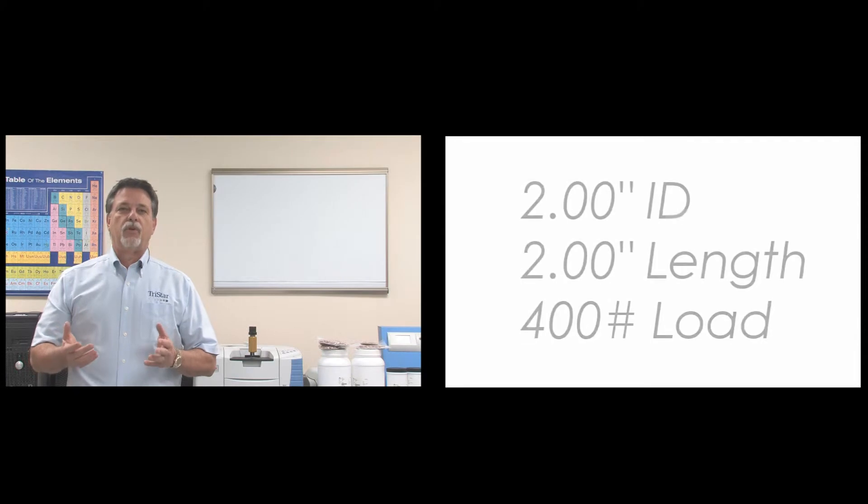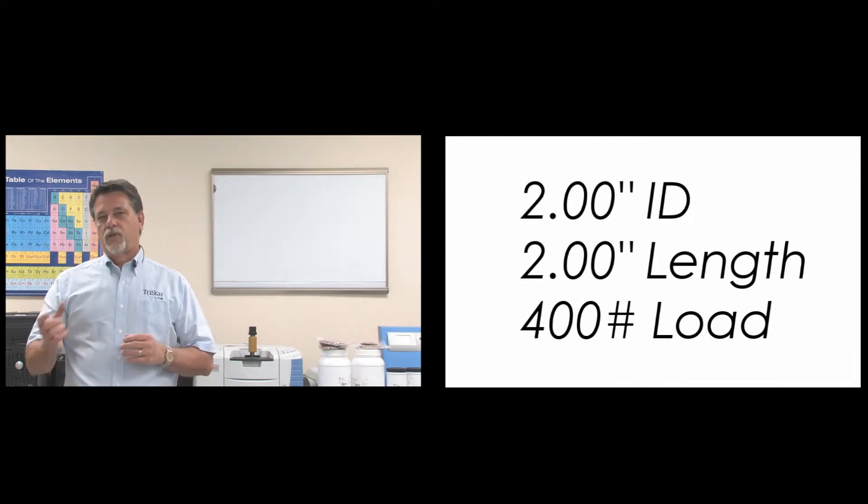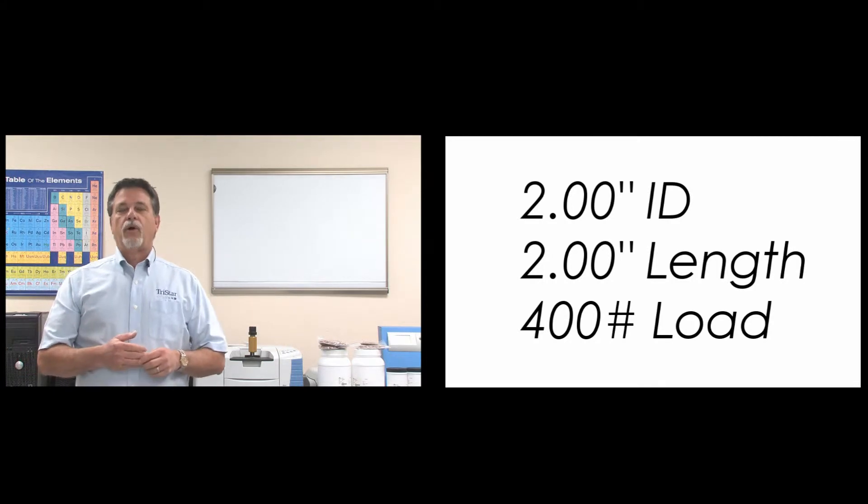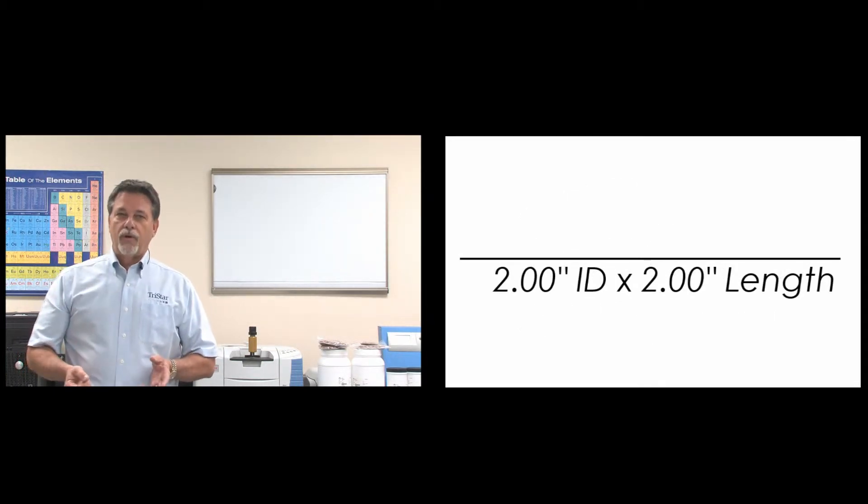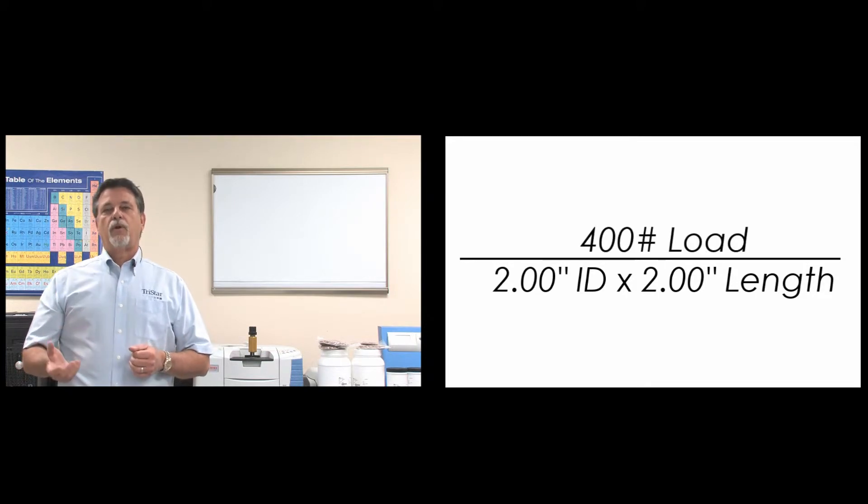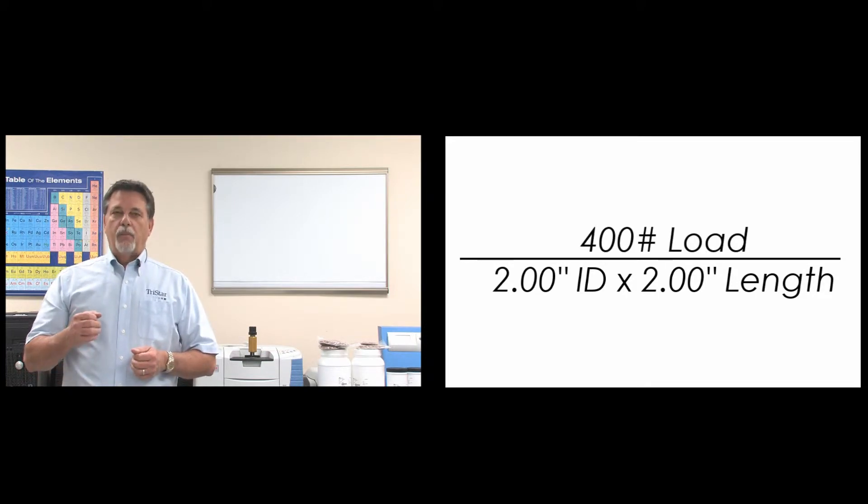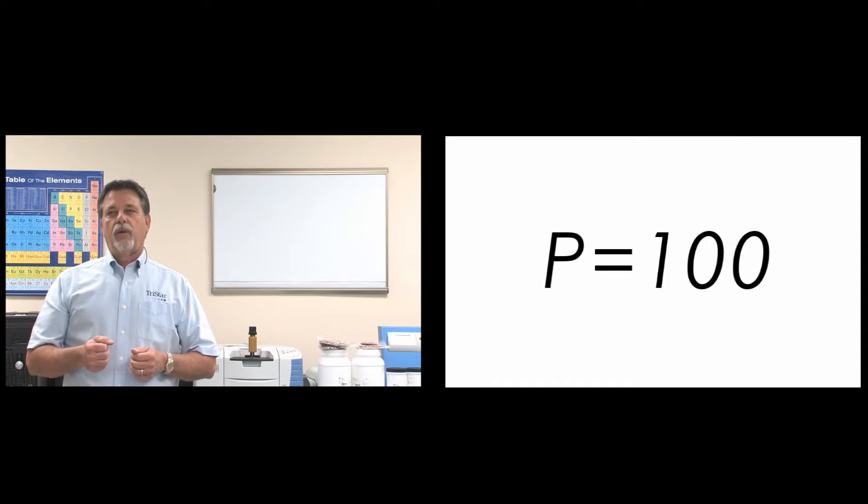So let's take an example of 2 inch ID, a 2 inch long bearing, and let's assume we've got a 400 pound load on the shaft. So 2 times 2 is 4, divide that into 400 pounds. Our PSI or our P value is 100.